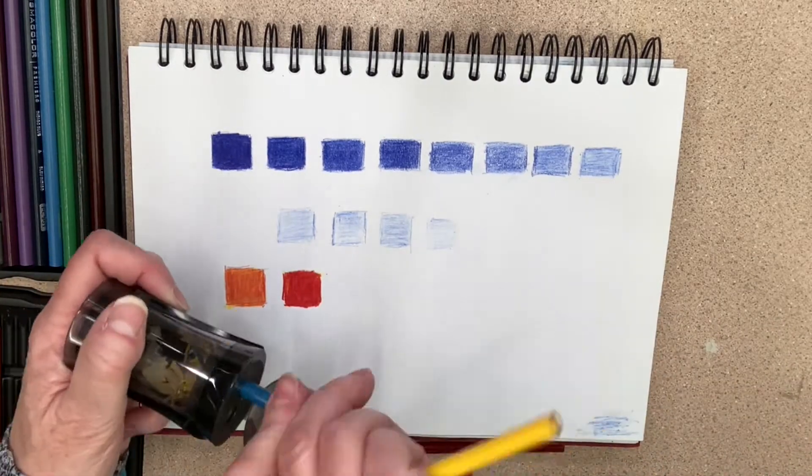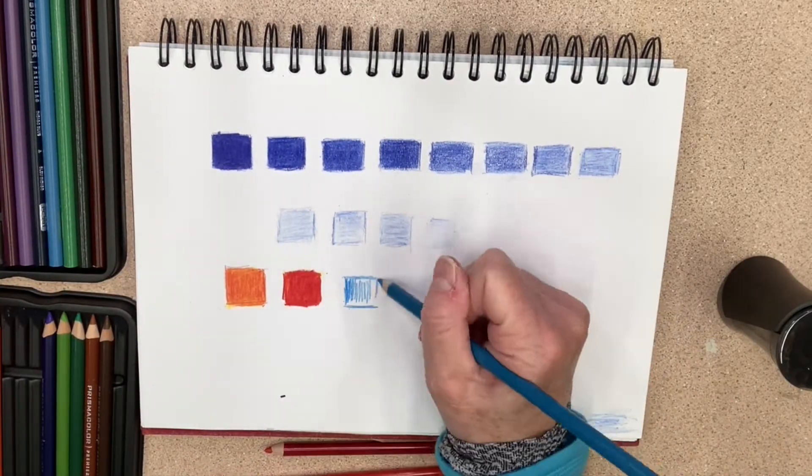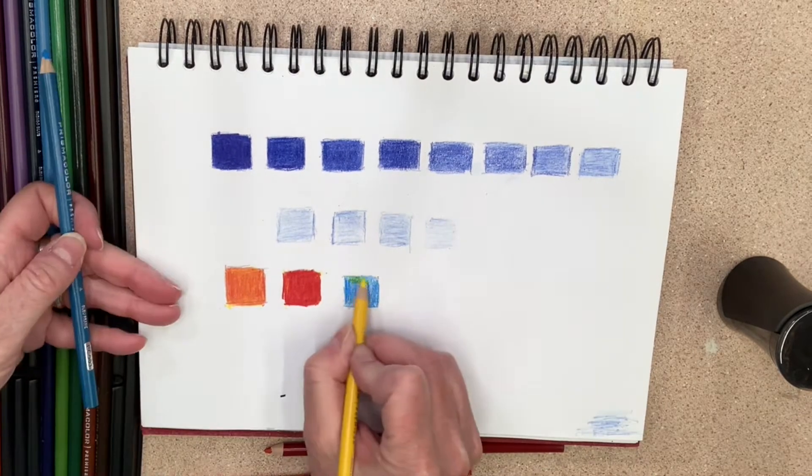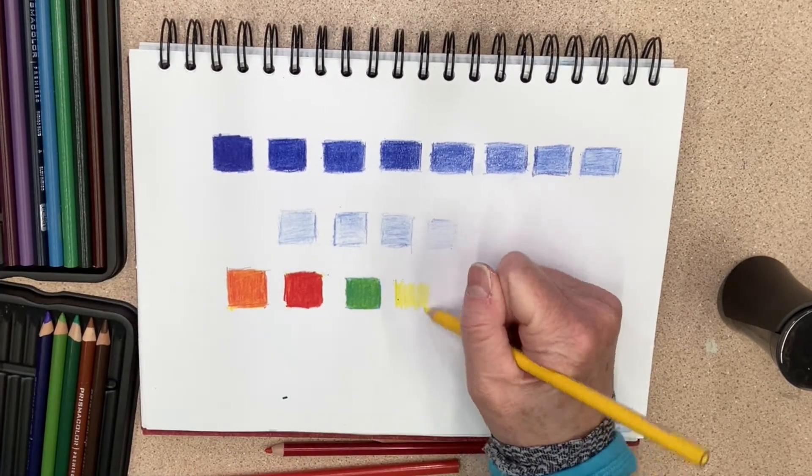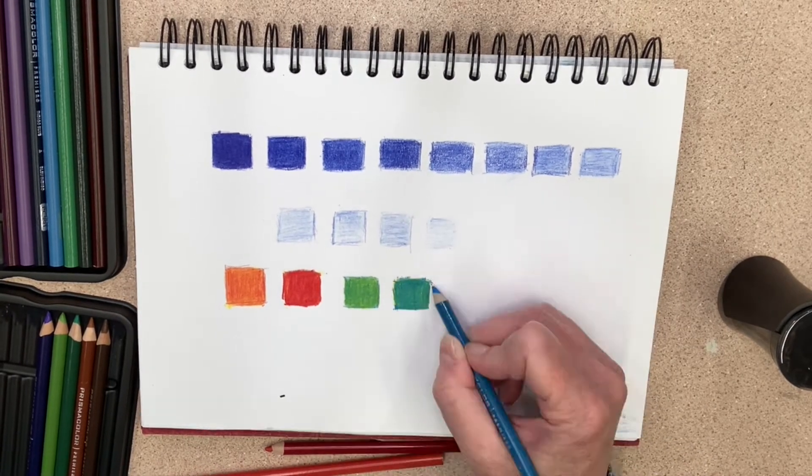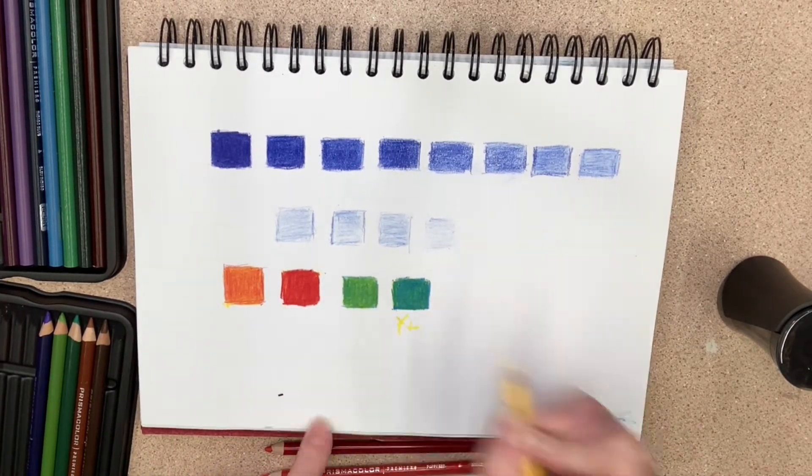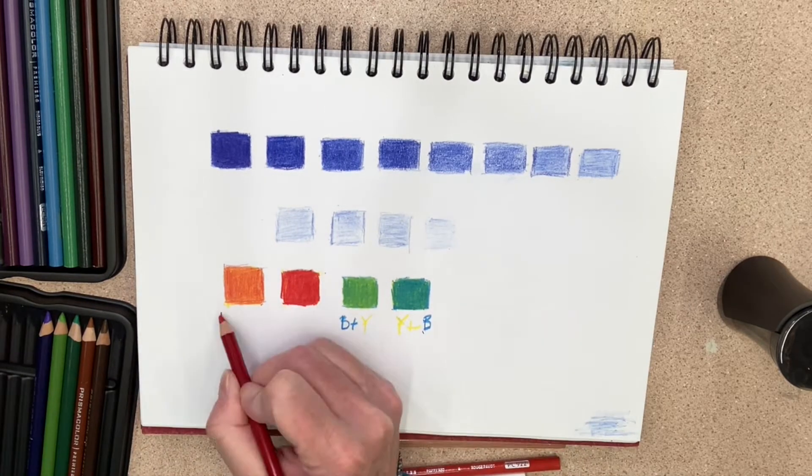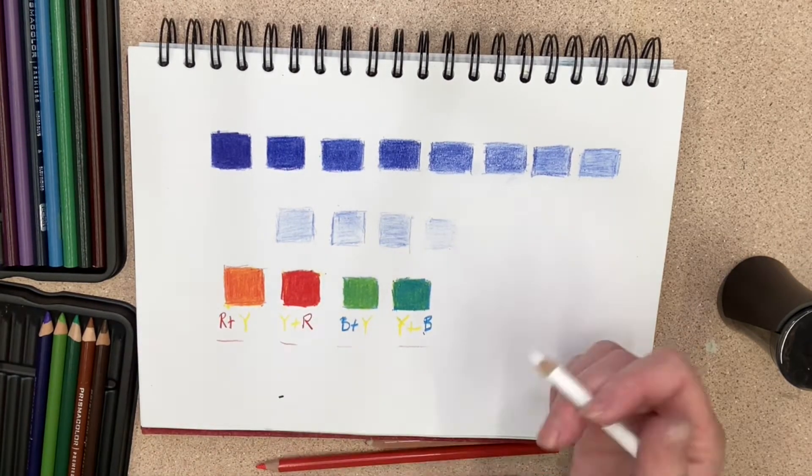Now I'm going to use the same technique with the true blue and the canary yellow to create green. And then of course, I'm going to switch them and you can see how different that color is. I'm labeling these so that I can refer back to them, which I highly recommend for creating a color chart.